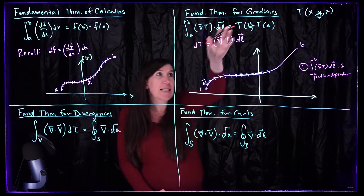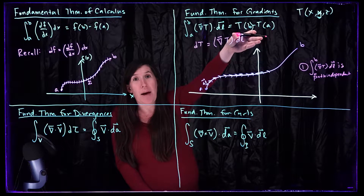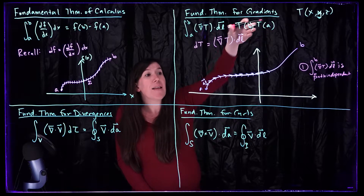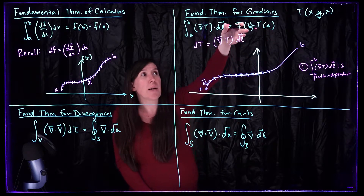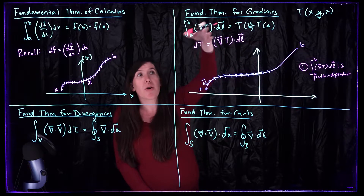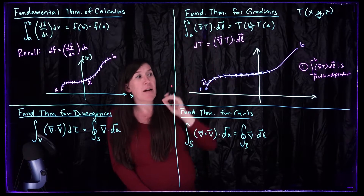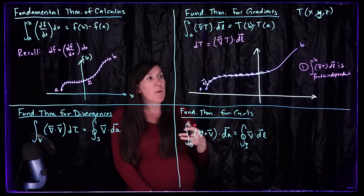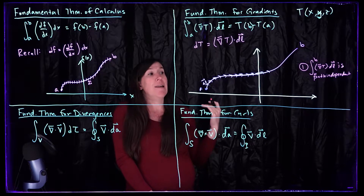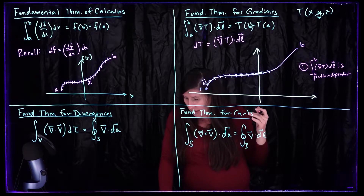A couple of important things immediately follow from this. Notice that the right-hand side only cares about our scalar field evaluated at points B and A — it doesn't care about the path taken between B and A. So this integral from A to B of the gradient of our scalar field dot dL is path independent. Because it equals the right-hand side, which knows nothing about the path — it's always going to be equal to this regardless of the path you choose. So you want to choose a path that's convenient.